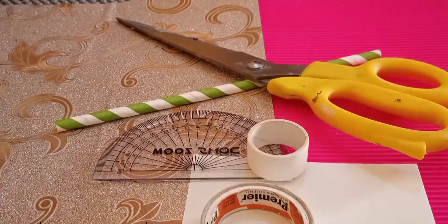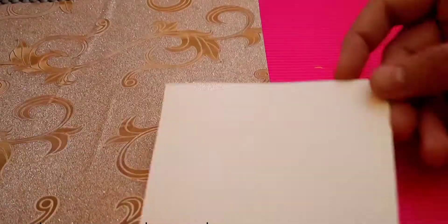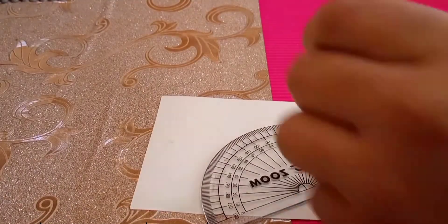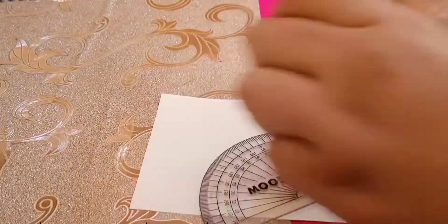double sided tape, scissor, fevistick, straw, and paper. Now you have to take a protractor and apply some glue on the back side of it and stick it with the paper.